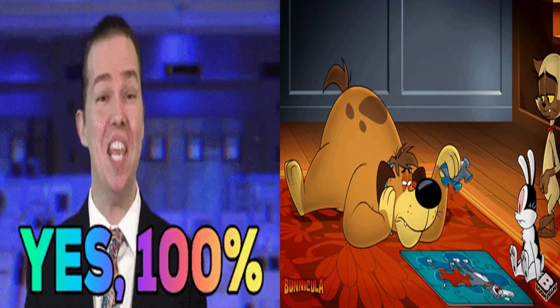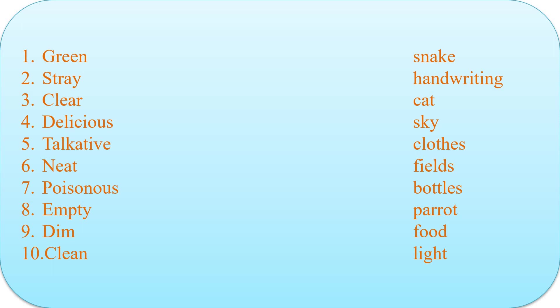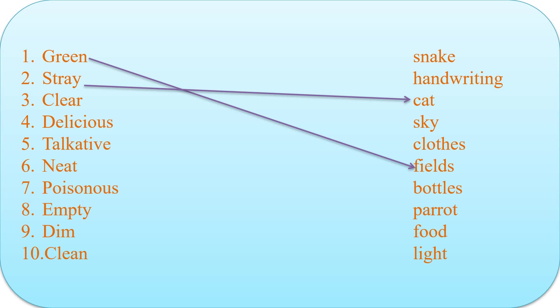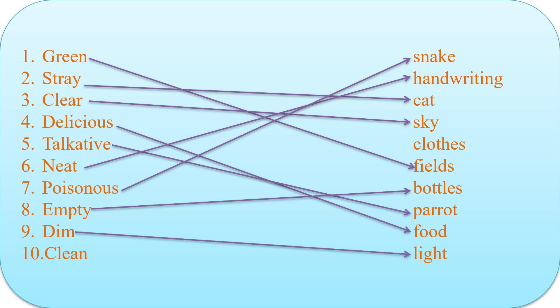Did you understand adjectives? If yes, let's solve an exercise to confirm. The question is: match the adjectives with the nouns. There are two columns — adjectives and nouns. Green matches with fields. Stray, meaning to walk aimlessly, matches with cat. Clear matches with sky. Delicious matches with food. Talkative matches with parrot. Neat matches with handwriting. Poisonous matches with snake. Empty matches with bottles. Dim matches with light. Clean matches with clothes.